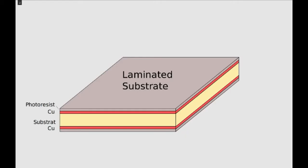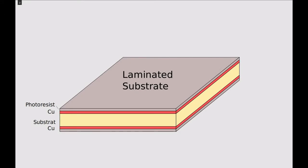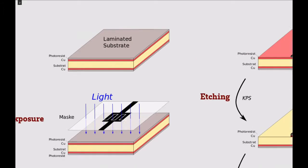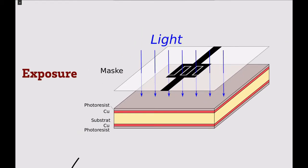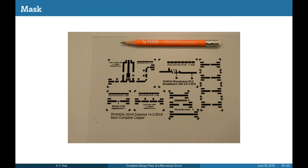We start with a microwave substrate which is covered on both sides with copper, and the copper is again covered by a photoresist layer. The first step is the exposure. We start with a transparent mask of the circuit.